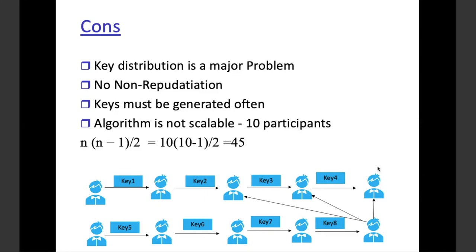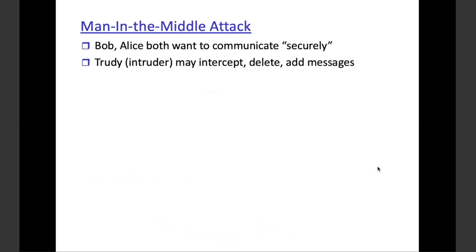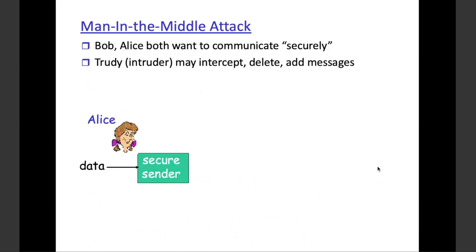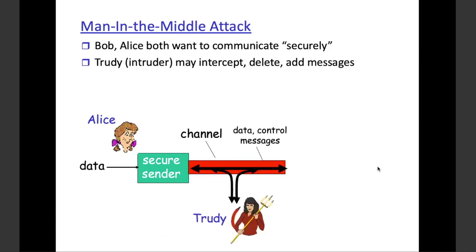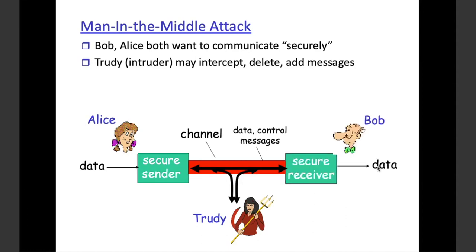There are also man-in-the-middle attacks. Alice is sending encrypted data, but Trudy is in the middle. The channel has been taken over by Trudy, who gets to know the key being used, forges the data, and sends it to Bob. What will Bob think? That it's being sent by Alice. Or if the message is deleted, Bob will never know.